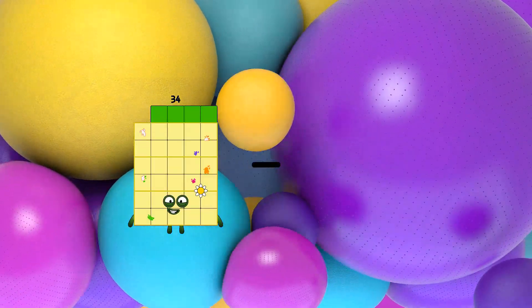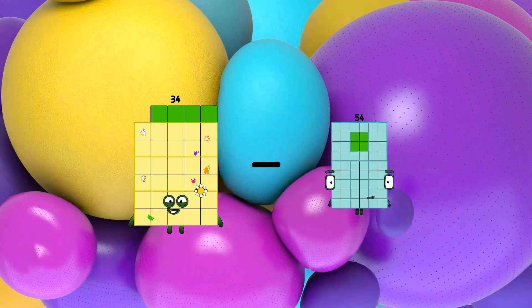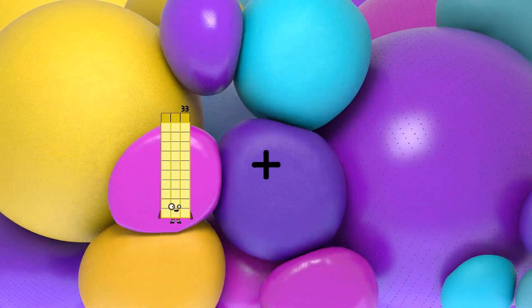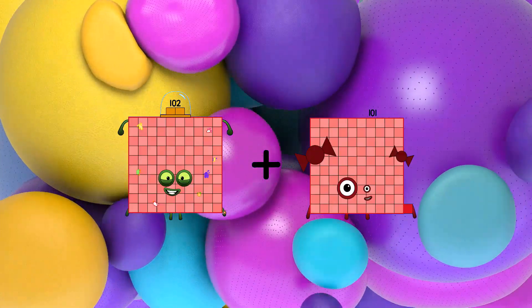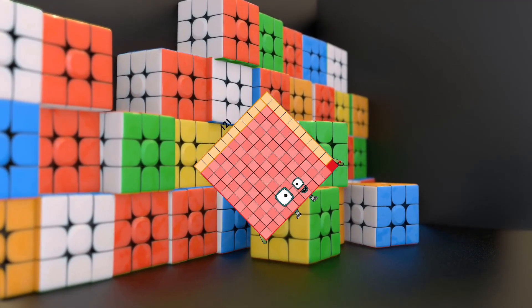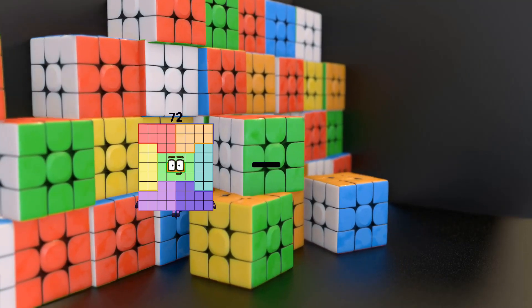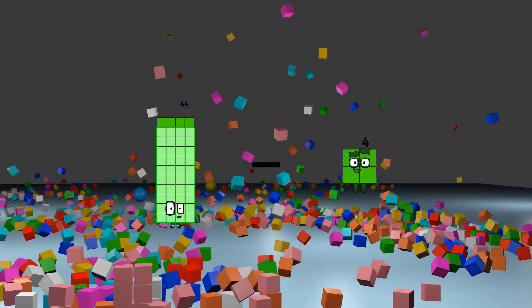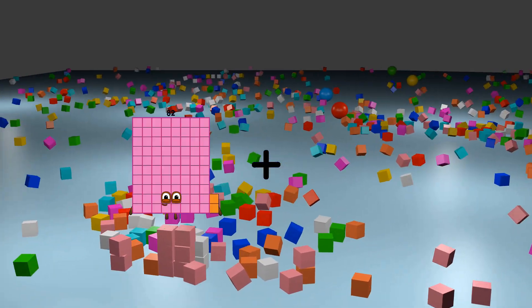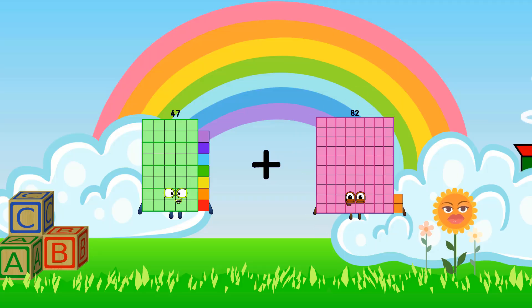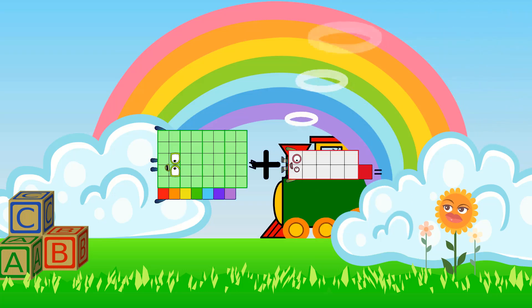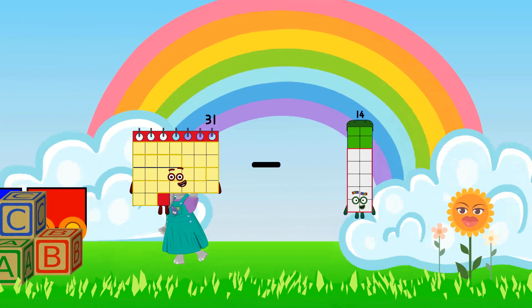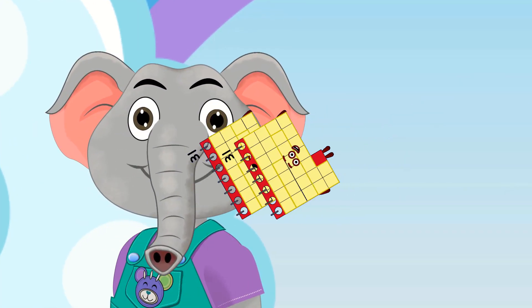34 minus 18 equals 16. 102 plus 19 equals 121. 44 minus 4 equals 40. 47 plus 11 equals 58. 31 minus 31 equals 0.